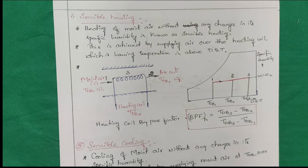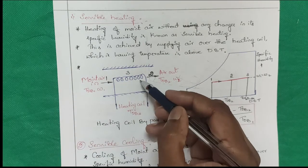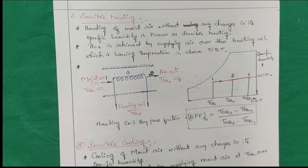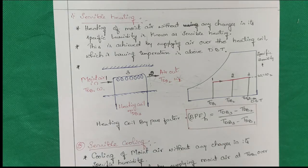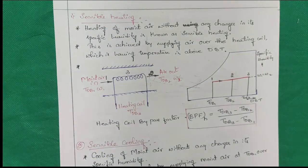How can you achieve sensible heating? You have one coil inside a chamber — a heating coil. If you supply moist air over the heating coil, the inlet temperature is lower but the outlet temperature increases, because the air absorbs heat from the heating coil and the temperature rises. The outlet temperature will be less than the heating coil temperature. This is how you represent it on the psychrometric chart.